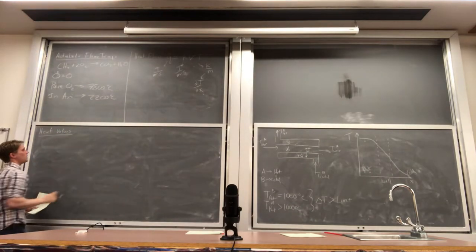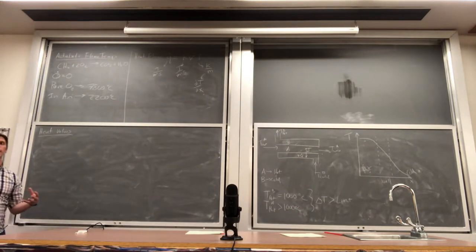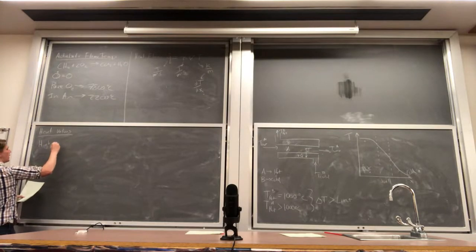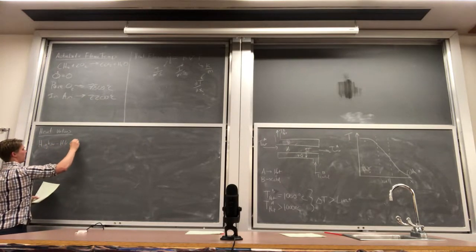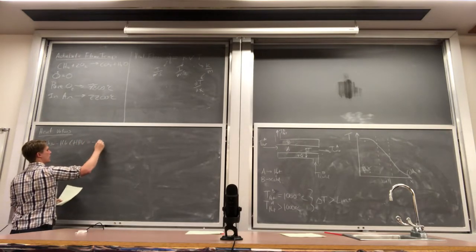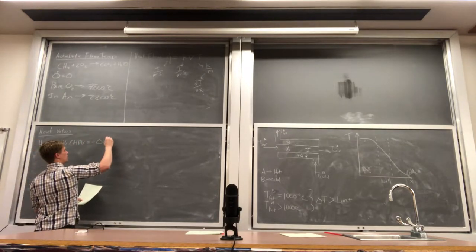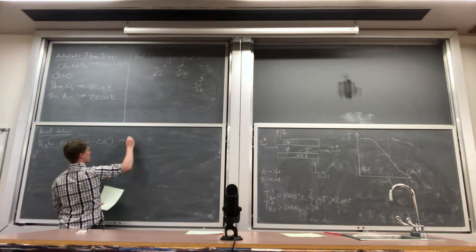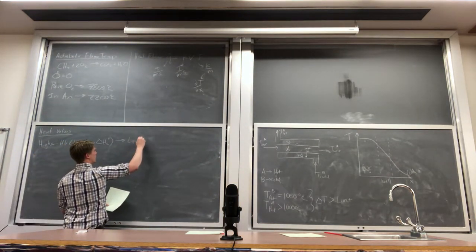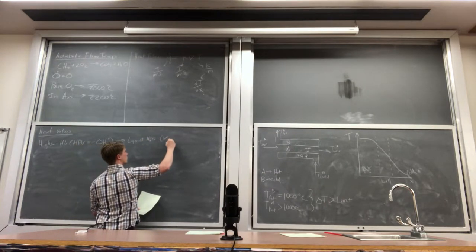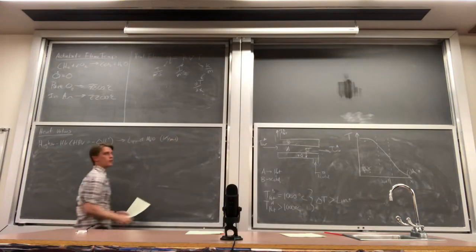So, the idea behind heating values is that sometimes you only want to buy something just to burn it. So, the higher heating value, higher heating value, or HHV, this is equal to the negative delta H of combustion. And this means you are producing liquid water, and generally, it's going to be in kilojoules per mole of your fuel.